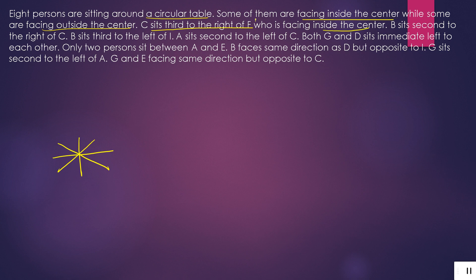Now, the 'who' after the comma refers to F — who ke just pehle F hai. It means F is facing inside the center — kendra ki orr dekh raha hai. So place F anywhere, facing inside the center. T sits third to the right of F. F ke right se third pe T aa jayega — one, two, three pe T aa jayega.